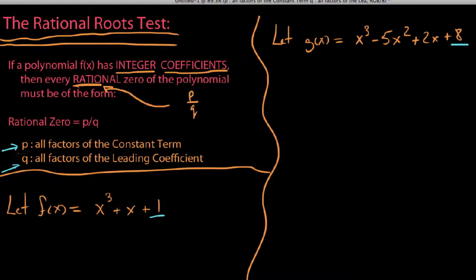Now, what the heck are p and q? Starting with right here, we say p. What does p represent? Well, given your polynomial, we say p represents all of the factors of the constant term.